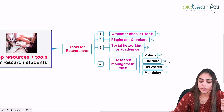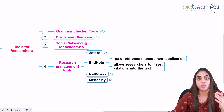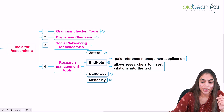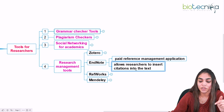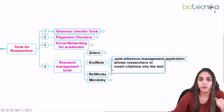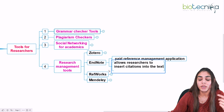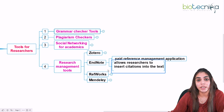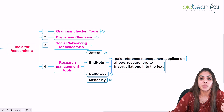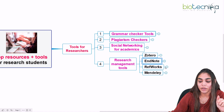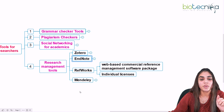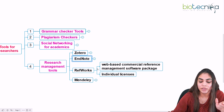The next tool is EndNote — a well-known paid reference management application. Some free tiered versions may be available but are limited. EndNote allows researchers to insert citations into text — for example, when writing an introduction, review of literature, or MSc dissertation. You also need citations for paper publication. Also well known are RefWorks and Mendeley, which most researchers use as they are easy to handle and access.